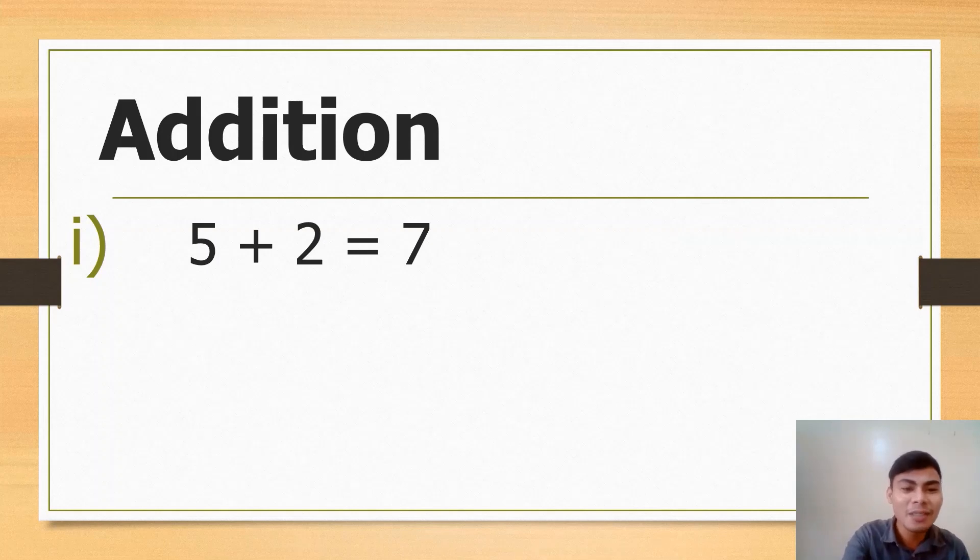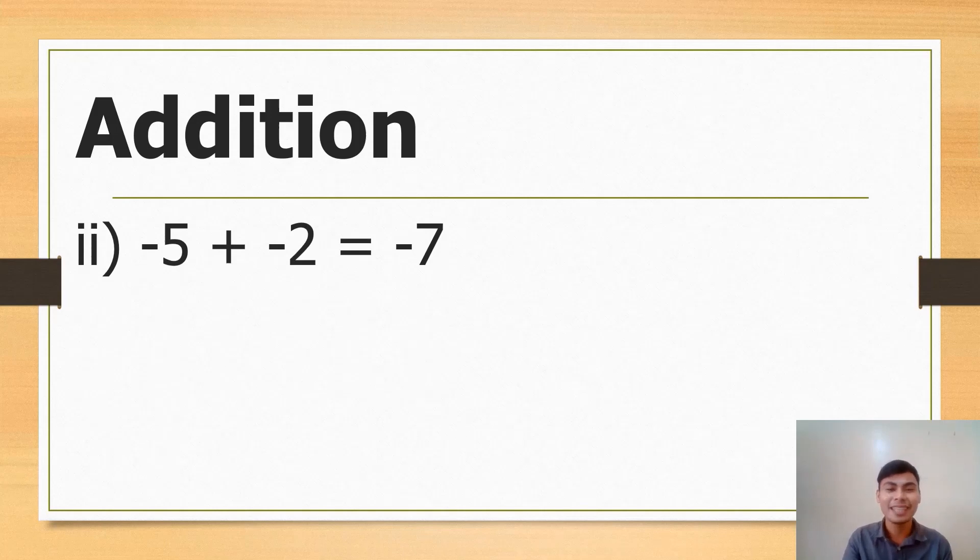So if we add the same sign, just add the numbers. 5 plus 2, then 7, and copy the sign, that's positive. So no need na to put positive 7. Let's have another example, yung mga basic nyo, yung grade 1: 1 plus 1. It's 2. Ganyan lang ka basic, guys. Now second case is we're adding the same sign, pero negative.